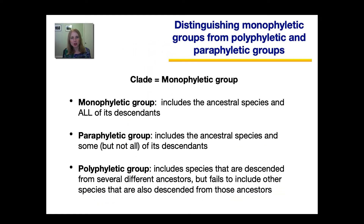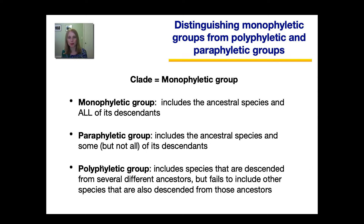This next part can be a little tricky — some vocabulary about different types of groupings. A clade is the same thing as a monophyletic group. A monophyletic group has the ancestral species and all of its descendants. However, we also have two other types: a paraphyletic group includes the ancestral species and some, but not all, of its descendants. And a polyphyletic group includes species that are descended from several different ancestors, but fails to include other species that are also descended from those ancestors.